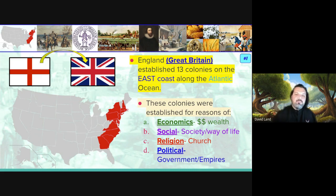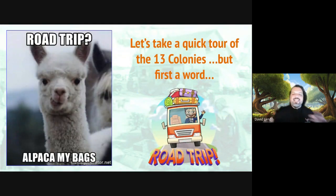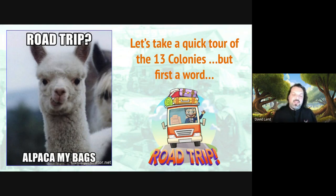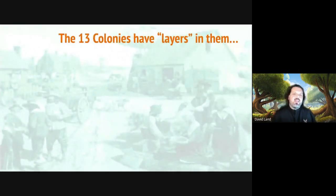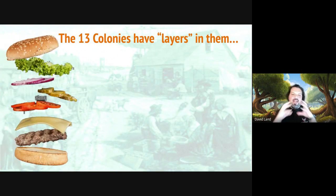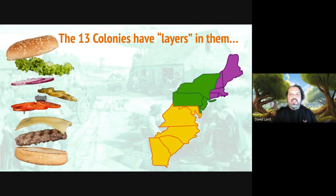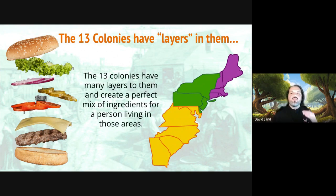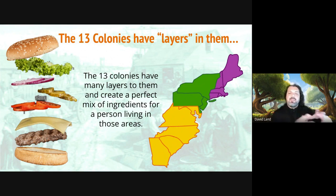So let's take a road trip — just kidding, that's a corny joke. We're going to take a quick tour of the 13 colonies. There are layers to the colonies. Think of Shrek, think of a parfait, an onion — I like to think of a burger. A beautiful burger has layers. When we look at the colonies, there are going to be layers to the learning, creating the perfect mix of ingredients.